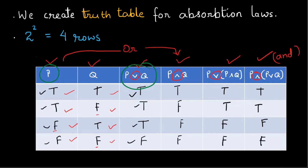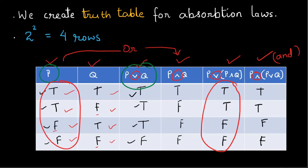Comparing the columns: P or (P and Q) matches with column P, which implies the first logical equivalence of the absorption law is valid. Similarly, column P is equivalent to column P and (P or Q), meaning the second equivalence of the absorption law is also valid. Therefore, we have proved with a truth table that the absorption law is a valid logical equivalence.